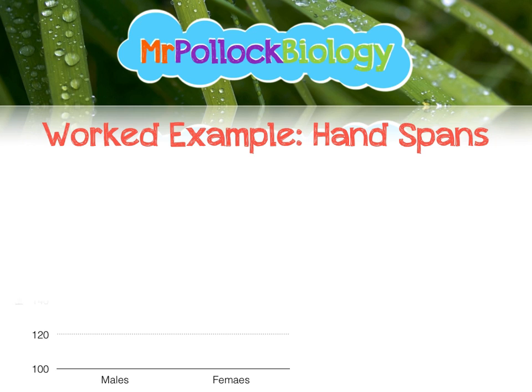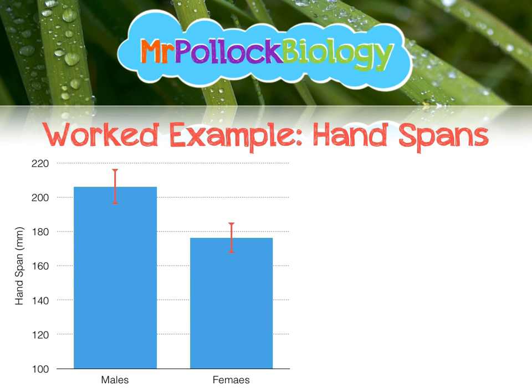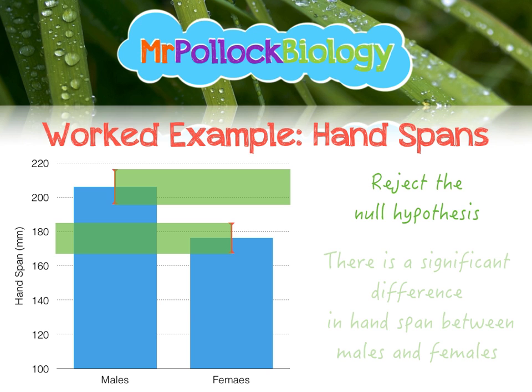If we put that on a graph, it should look something like this. Looking at the error bars, we can see that they do not overlap. That means we can reject the null hypothesis. Our conclusion is that there is a significant difference in hand span between males and females.